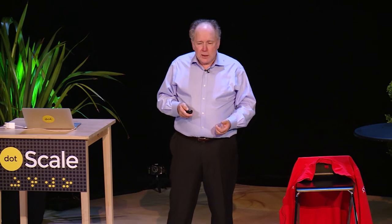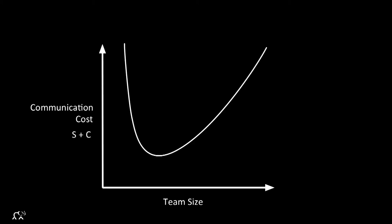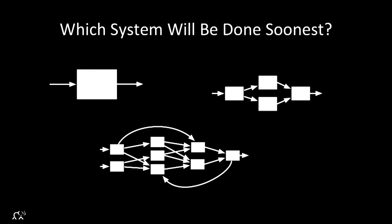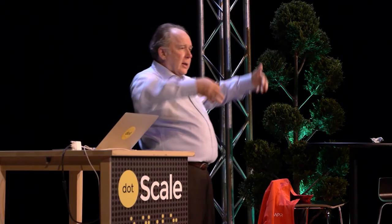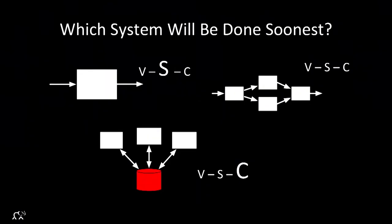So what is the right shape for a system? A monolith — one block — means the internal team is big and communication costs will be high. A system with too many components means the external communication cost is too high. The just-right middle ground avoids both penalties. The same problem applies to many processes on a rigid schema database — too much coupling between services.